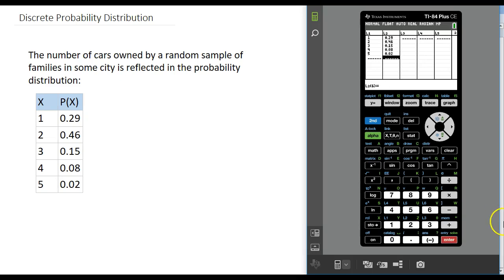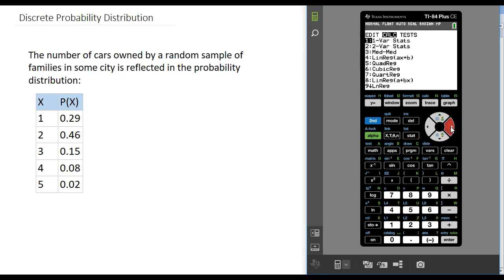Then go back to the stat button, press stat again, go over to the calc menu, and select one-variable stats. Press enter on choice number one. Your list of values for your discrete variable should be under list—that was column one for me. Under frequency list, put the column where we entered the probabilities, which is list two.